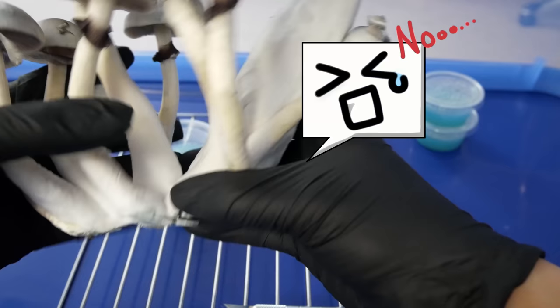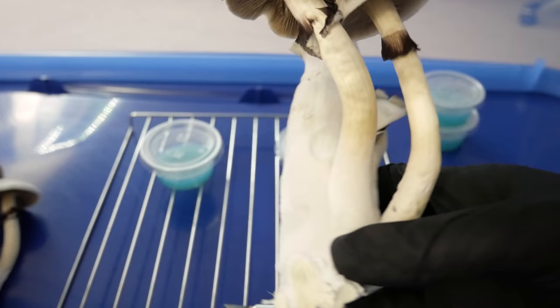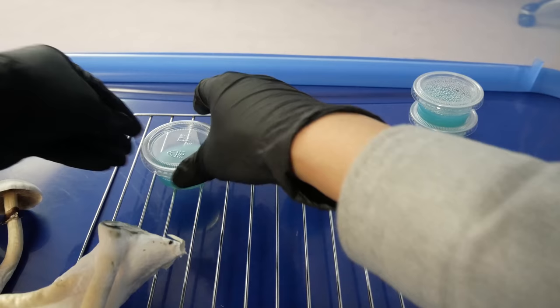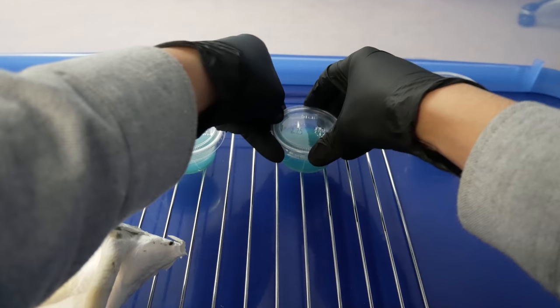Here I'm going to separate this big fruit body from the rest of the cluster to make it easier to work with. Now we'll go ahead and prepare my agar cups, I'll loosen up the lids here to make it easier to transfer the tissue onto the agar.